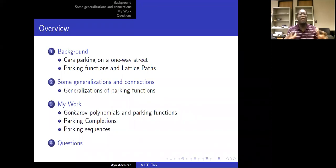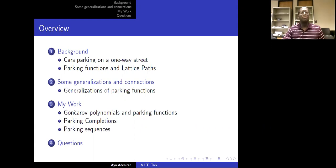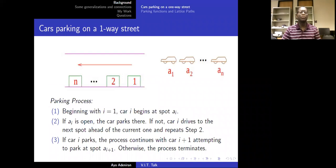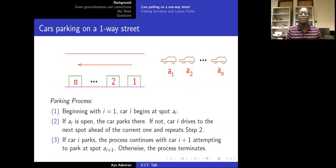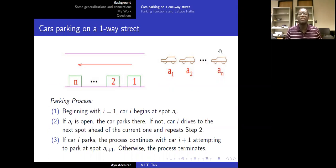At the end, I'll answer some questions. Let's dive right into it. So let's talk about cars parking on a one-way street. In this picture, you have N cars — car one, car two, and so on up until car N — and each of these cars are attempting to park on a street with N spots. Notice that this is a one-way street.